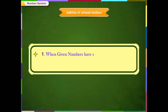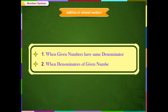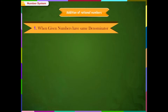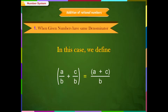Case 1: When the given numbers have the same denominator. In this case, we define a/b + c/b = (a + c)/b.